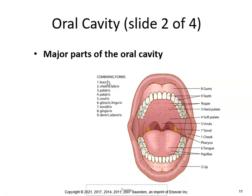This is not an anatomy class, but you do need to know the combining forms. Cheek is buccal; lip is cheil or labio; hard palate is palato; soft palate is palato; uvula is uvio; tongue is glosso or lingual; tonsil is tonsil; and gingiva — number eight — refers to the gums. Gingivitis is the inflammation of the gums. Denta or odonto refers to the teeth.